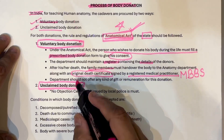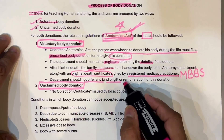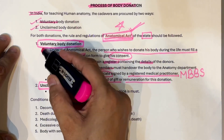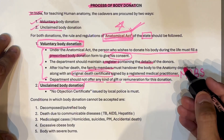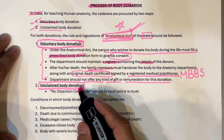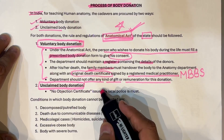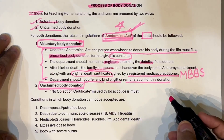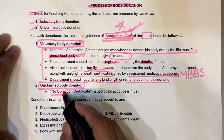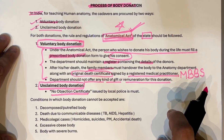The department should not give any kind of gift or remuneration against this donation. These three points should be there when you are writing about voluntary body donation. Then you should write one or two lines about unclaimed body donation: unclaimed body donations are generally received from the associated hospitals of medical colleges, and in this condition the police should give a no objection certificate to the department about that body.